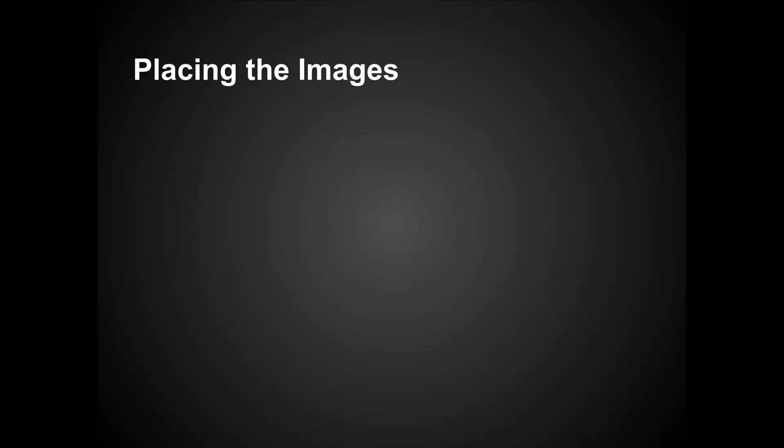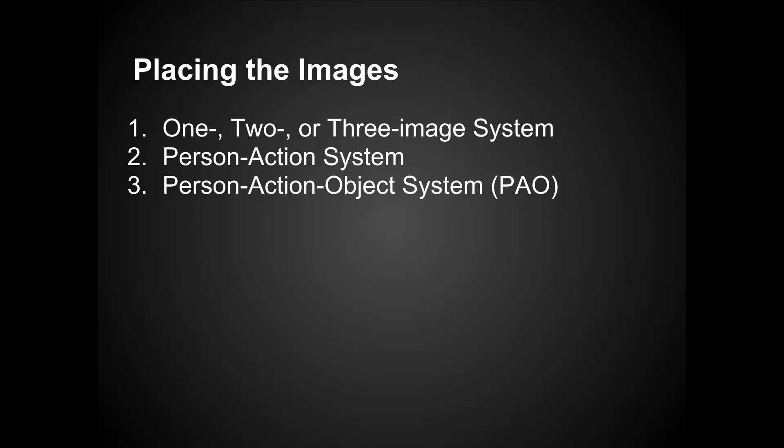So now that you have your 100 images from 00 to 99, you want to place those in your memory palace. There are three main systems: a 1, 2, or 3 image system, where you would place either 1, 2, or 3 images in every location in your memory palace. And then there are two compound image systems: the person action system, and the person action object system, or PAO system.